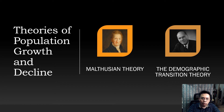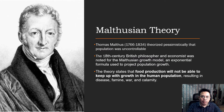Now we move to the theories of population growth and decline. There are two theories we will be discussing: the Malthusian theory and the demographic transition theory. The Malthusian theory was popularized by Thomas Malthus, an 18th-century British philosopher and economist, who theorized pessimistically that the population was uncontrollable. He is noted for the Malthusian growth model, an exponential formula used to project population growth.